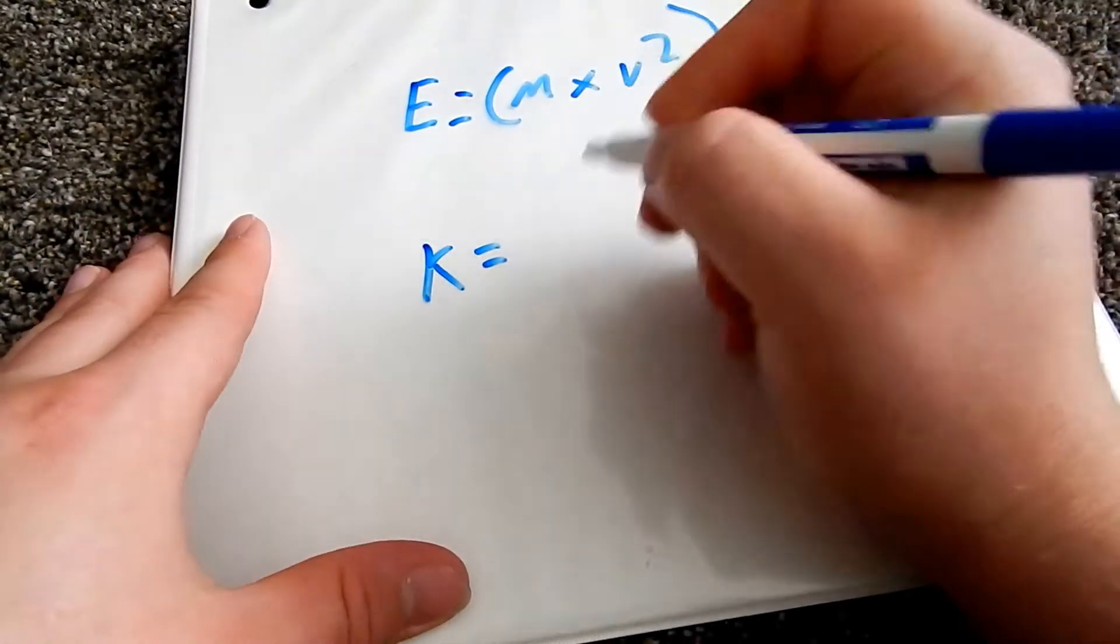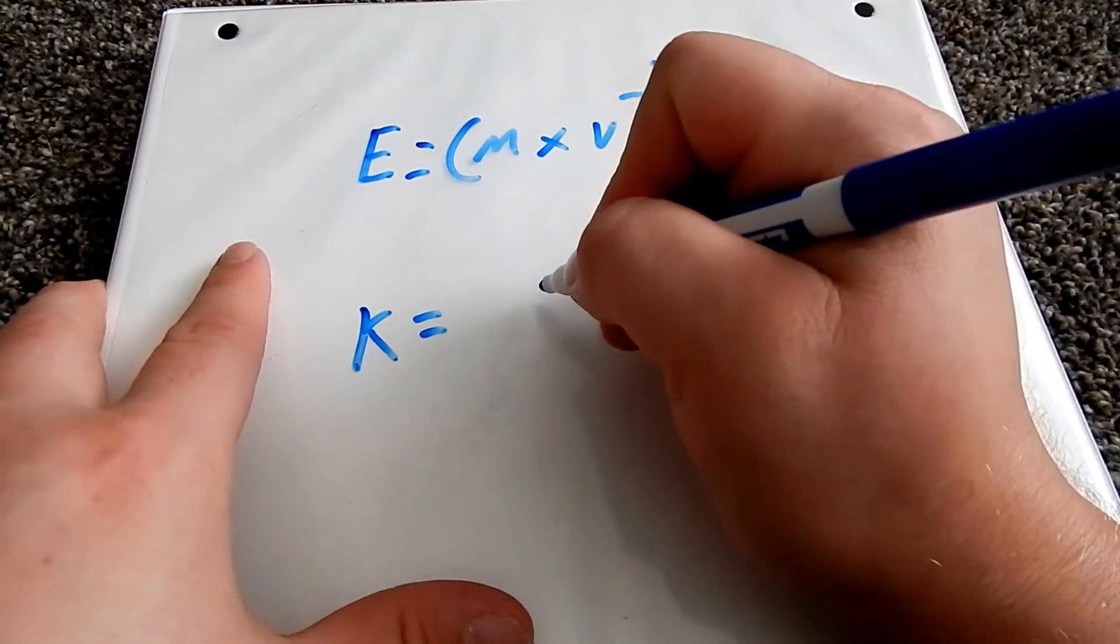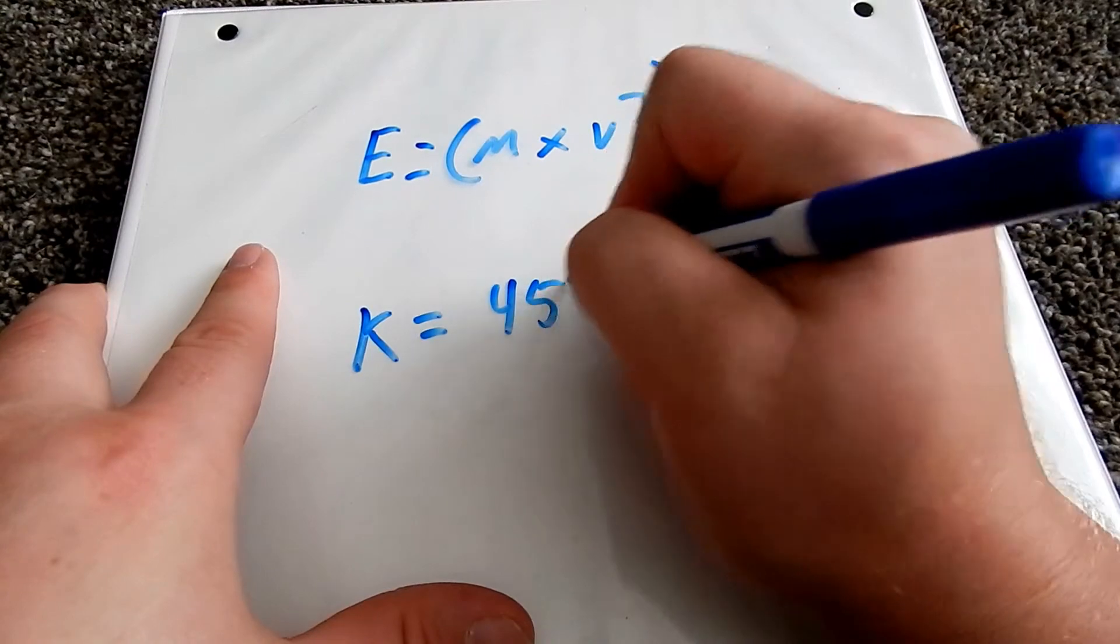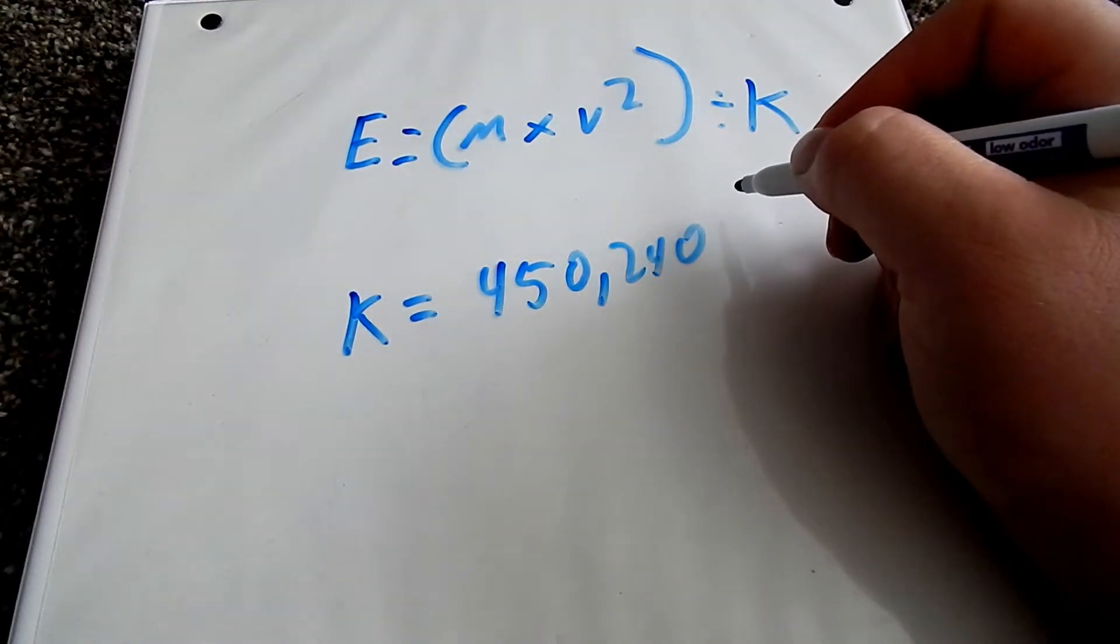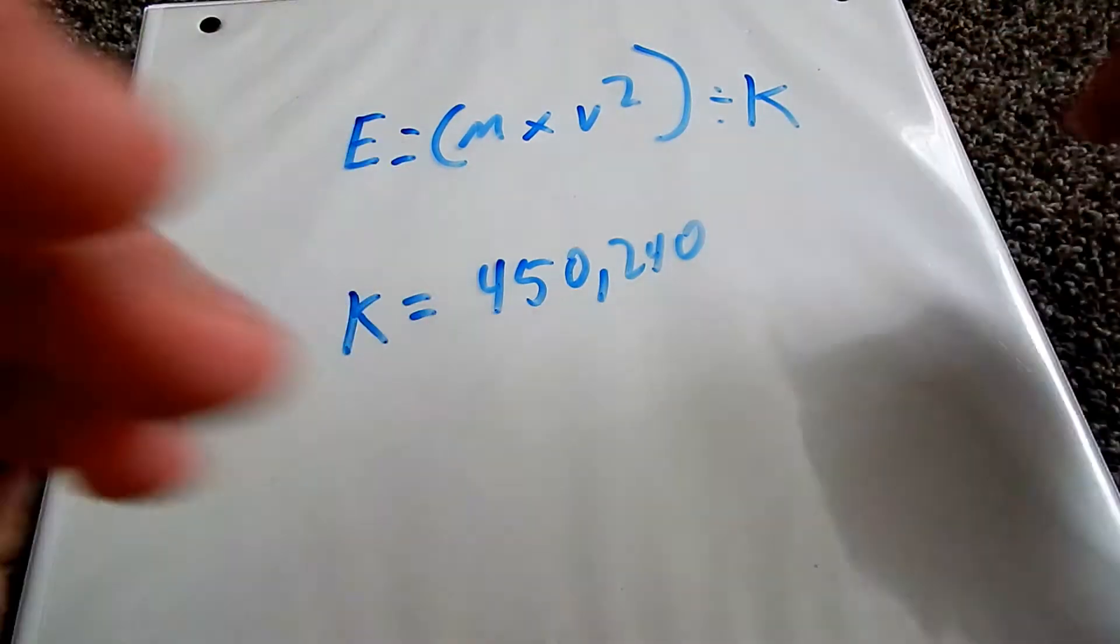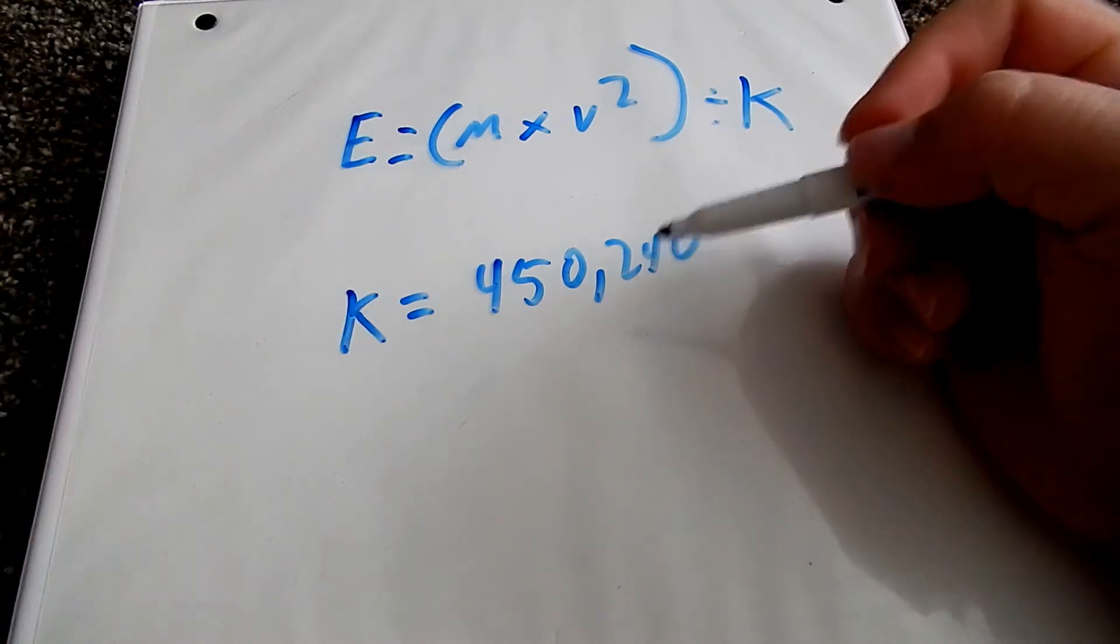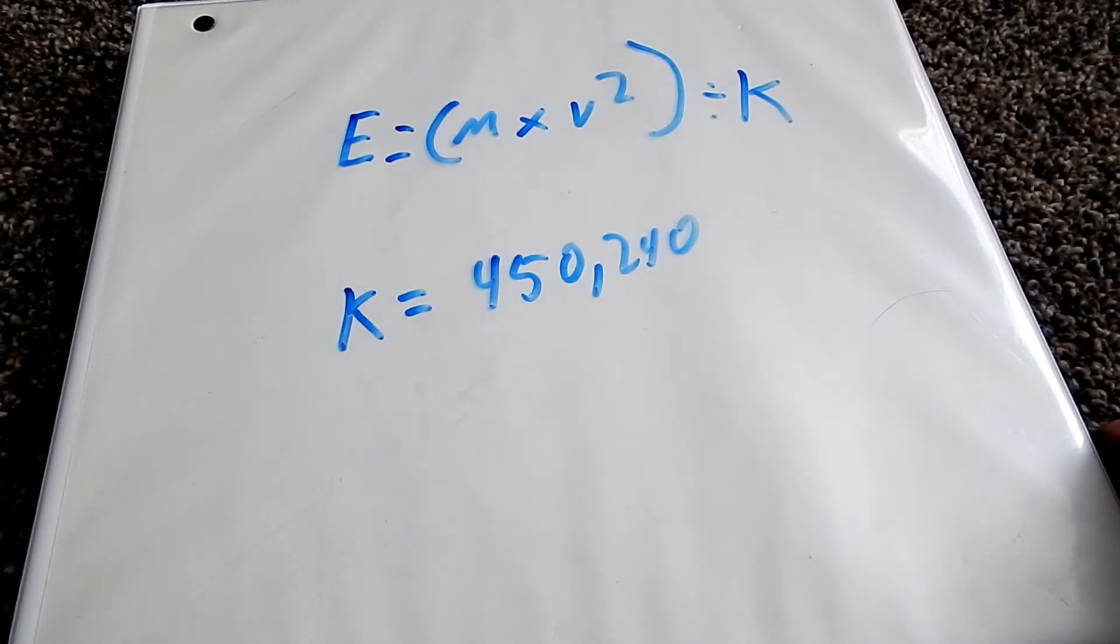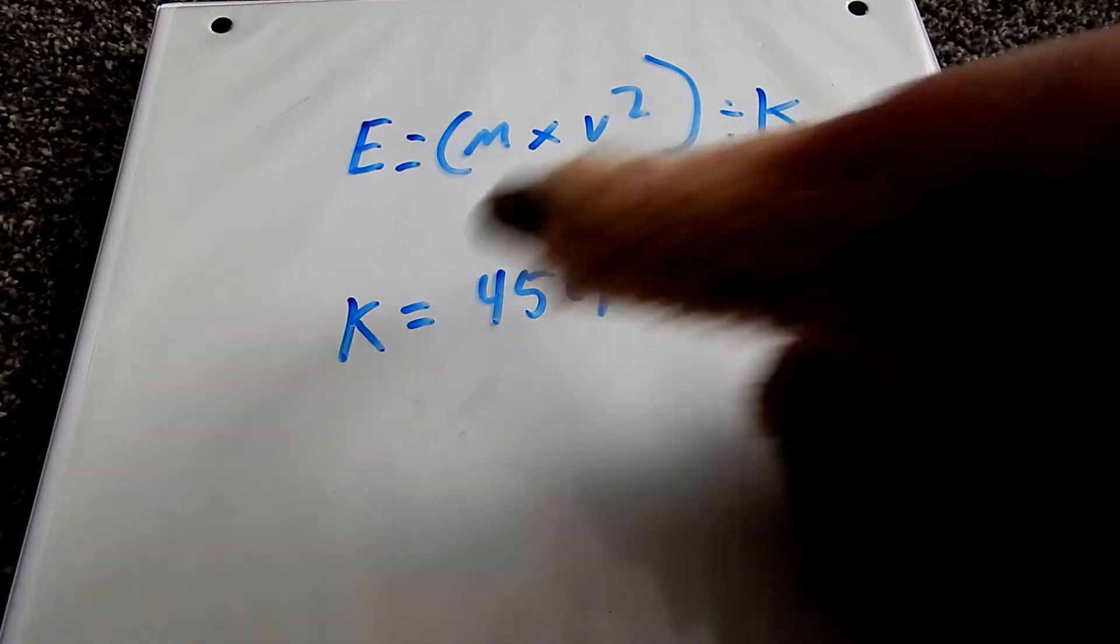So that roughly multiplied out comes up with k equals, and there's a little bit of variations I've seen on this, but roughly 450,240. Depending on how you do your math, this last few digits here can be a little different, but it does not change the muzzle energy all that much.